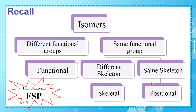Regarding the recall on isomers, we have three types of structural isomers. To determine the type of isomerism between two or three compounds: first, check their functional group — if different, they are functional isomers. If the same, look at their skeleton or carbon chain — if different, they are skeletal isomers. If the same, they are positional isomers. Always remember the hint FSP: Functional, Skeletal, Positional.